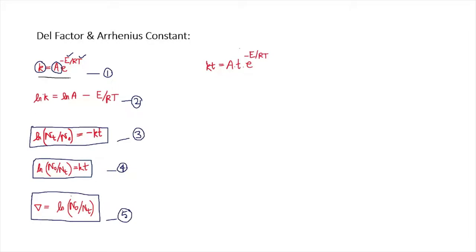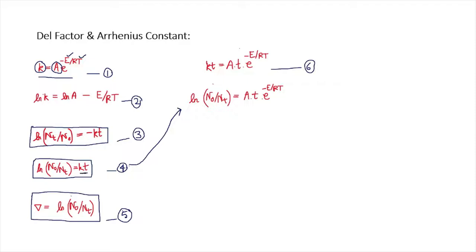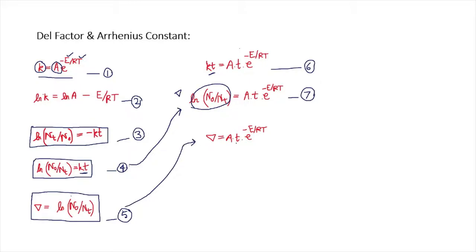If K = A·e^(−E/RT), then K·T = A·T·e^(−E/RT). Since ln(N0/NT) = KT, we can write ln(N0/NT) = A·T·e^(−E/RT). Since the del factor is defined as ln(N0/NT), the del factor can be written as A·T·e^(−E/RT).